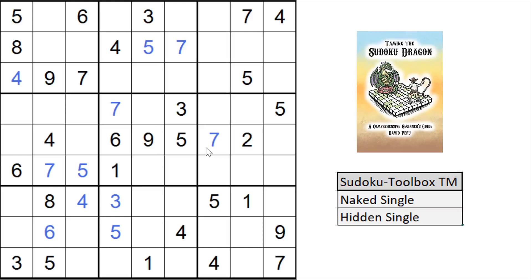And moving along, if you look here, a 2, 3, 4, 5, 6, 7, 8, 9, all feed into this cell. Only a 1 doesn't. So that has to be a 1. And that's a naked single.